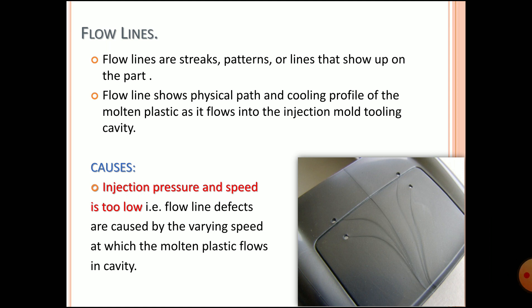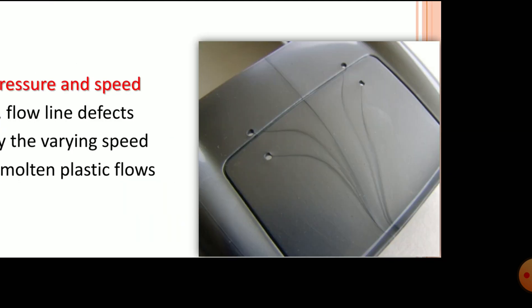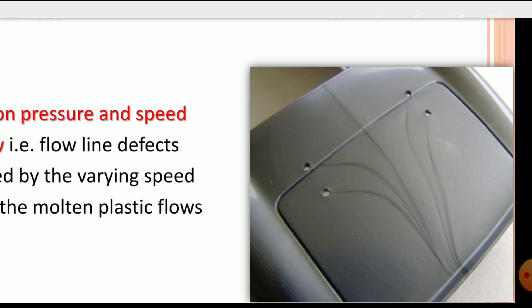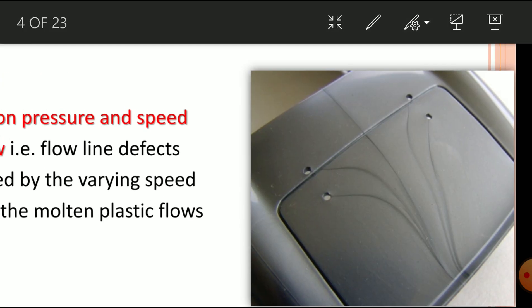The first defect is the flow line. As the name indicates, during injection molding, the molten plastic flow path is visible on your component surface after solidification. Flow lines are streak patterns or lines that appear on your component surface, as you can see in the image — those are flow lines.